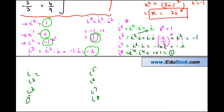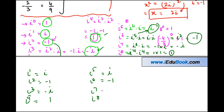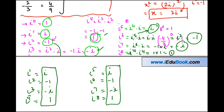Plotting these values: i¹ = i, i² = −1, i³ = −i, i⁴ = 1, i⁵ = i, i⁶ = −1, i⁷ = −i, i⁸ = 1. What we find is that the values of the different powers of iota are actually repeating themselves — once i to the power four is reached, the pattern cycles back.